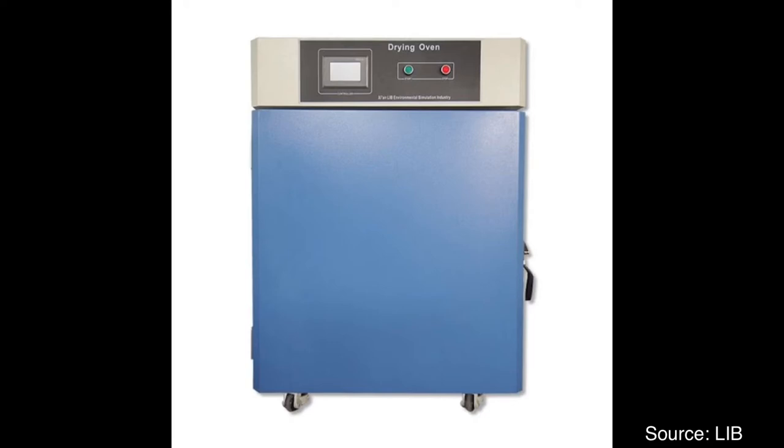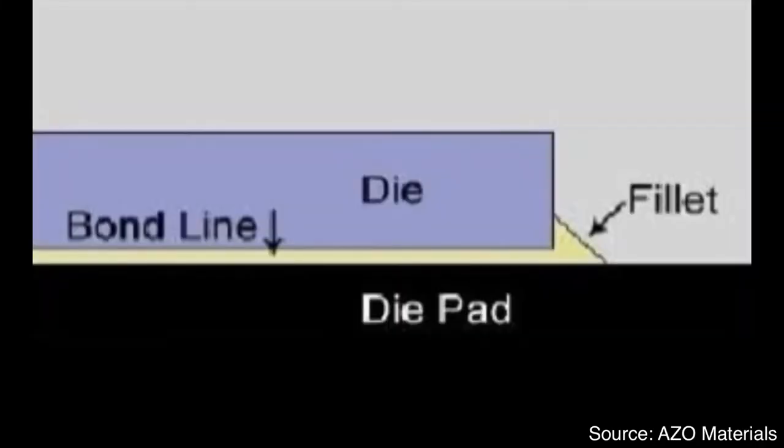Then, die stays at fixed location without moving. For this process, die location accuracy, rotation accuracy, tilt, bond line thickness, or short BLT, and fillet are important.